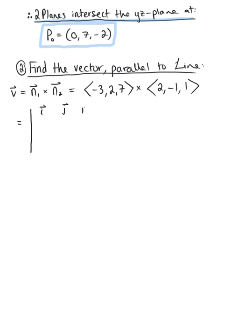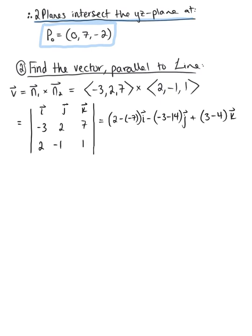So we have our first row of unit vectors i-hat, j-hat, k-hat. The second row is negative 3, 2, 7, and our third row is 2, negative 1, 1. By the cross product, we have 2 minus negative 7 for i-hat, minus negative 3 minus 14 for j-hat, plus positive 3 minus 4 for k-hat. Simplifying, this leaves us with 9 i-hat, plus 17 j-hat, minus k-hat. Therefore, one possible parallel vector to our line of intersection is defined by the vector with the components 9, 17, negative 1.